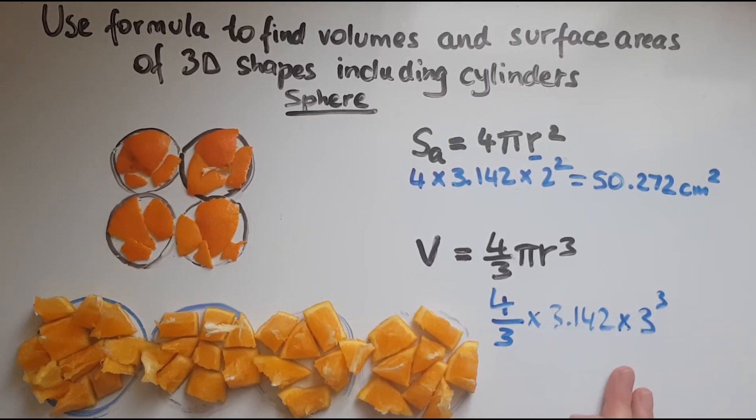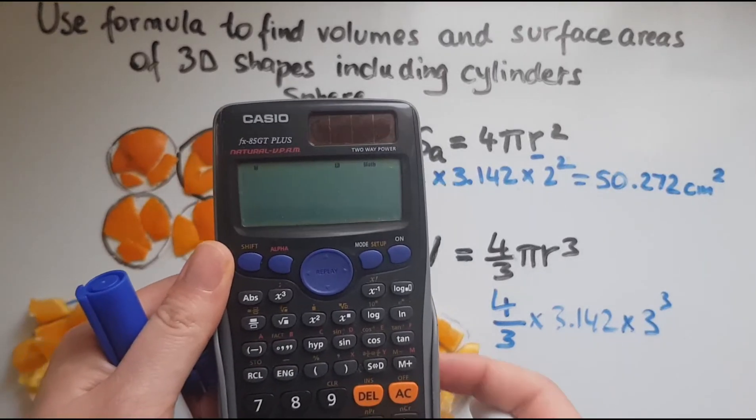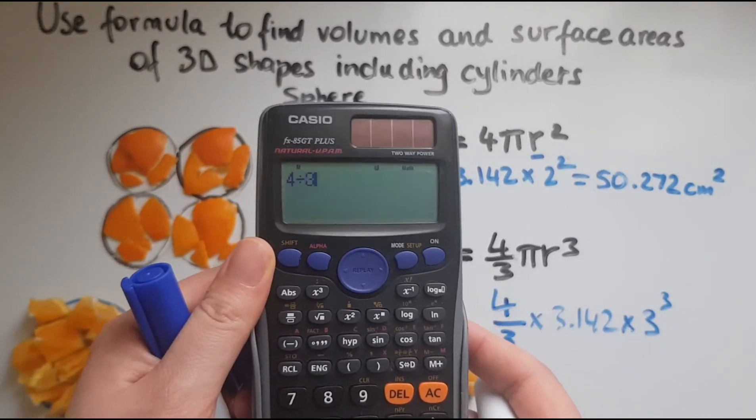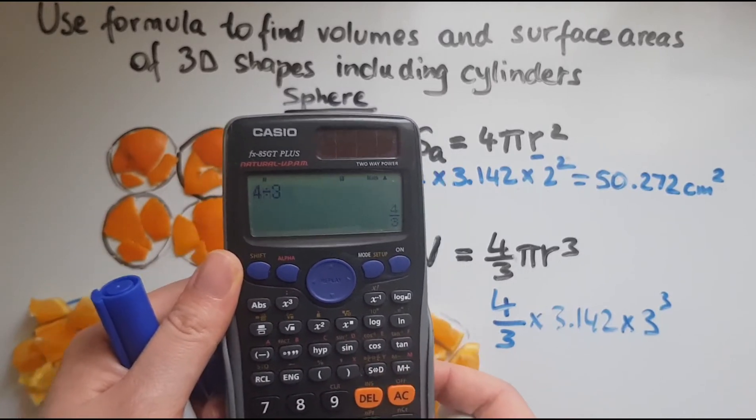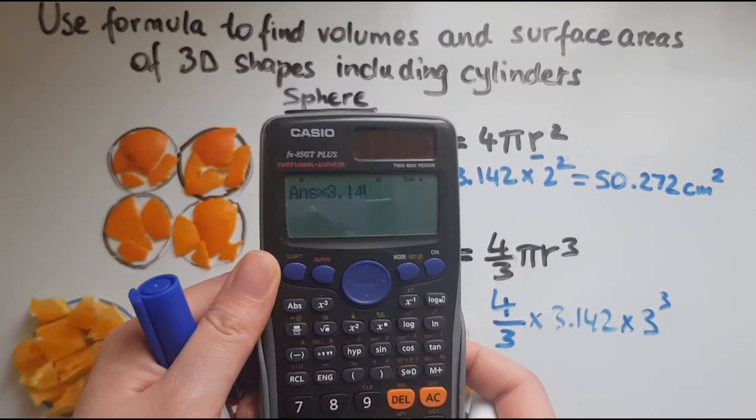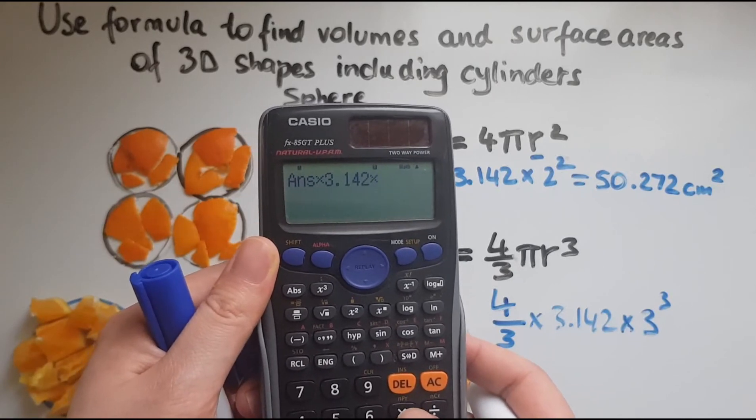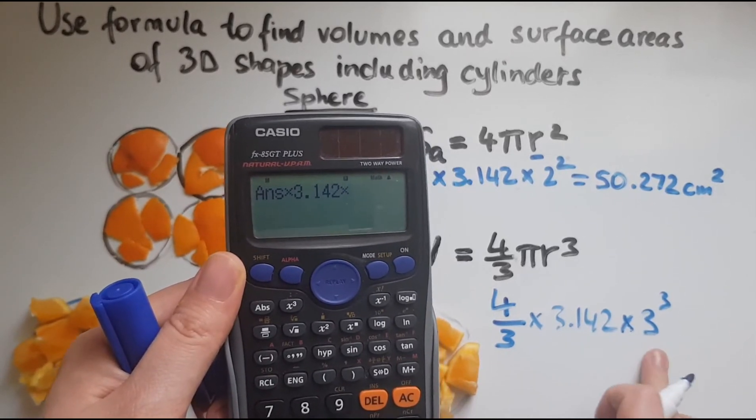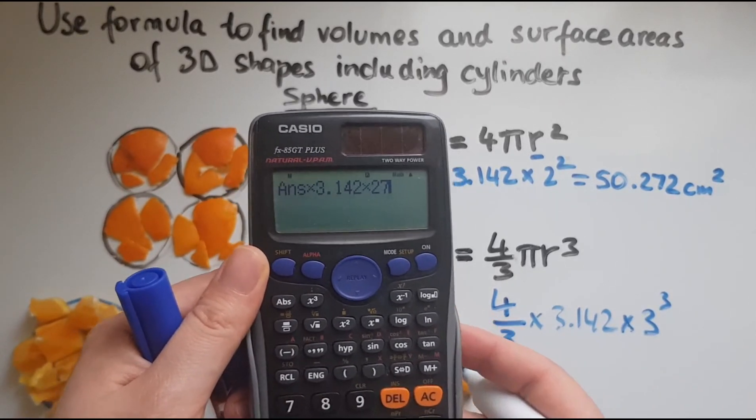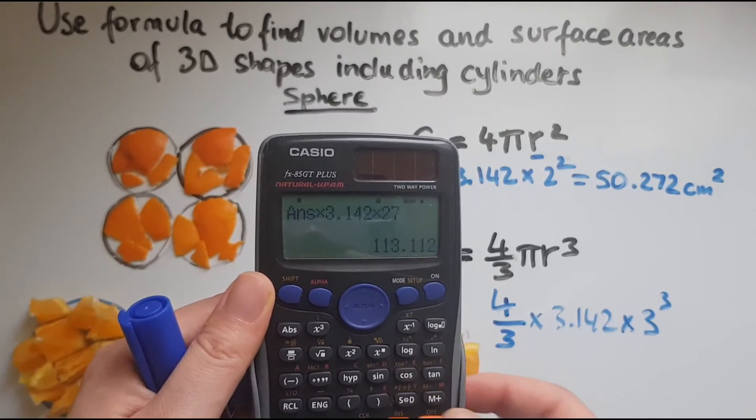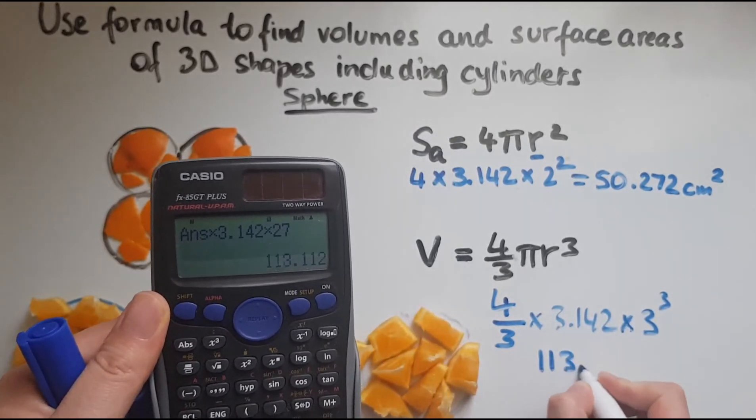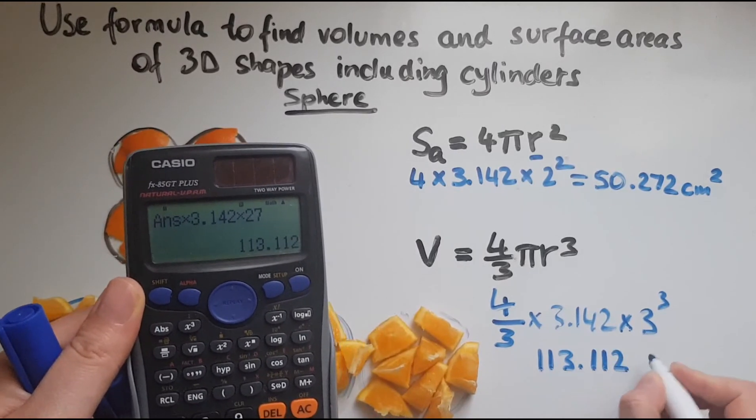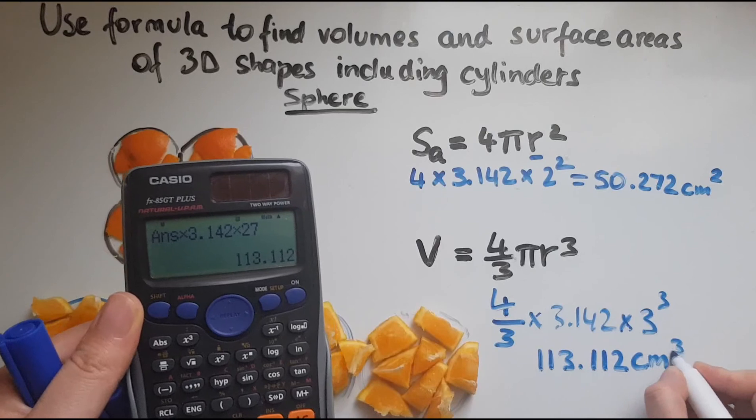Because we're dealing with volume, we can do this with a calculator or by hand. I'll just do it quickly with a calculator: 4 divided by 3, then times 3.142, times 3 cubed, which is 27 (3×3=9, ×3=27). That gives us 113.112 cm³.